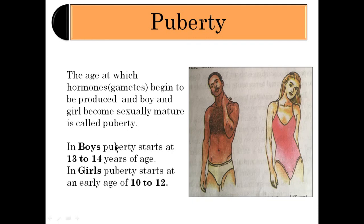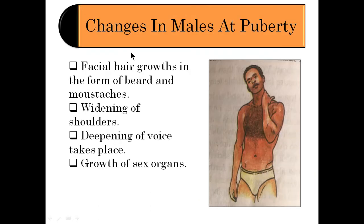In boys, puberty occurs at 13 to 14 years, and in girls the puberty age is 10 to 12 years, but this can also vary. The age at which hormones begin to be produced and boys and girls become sexually mature is known as the age of puberty.